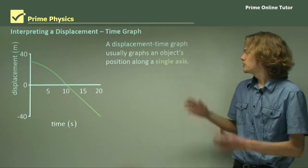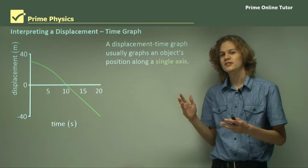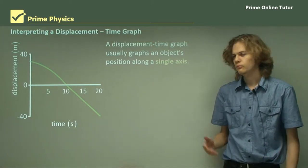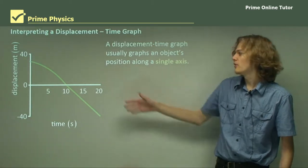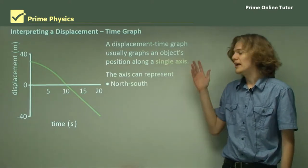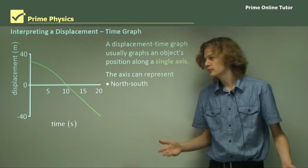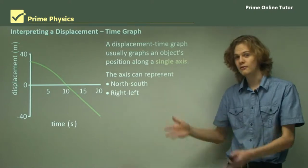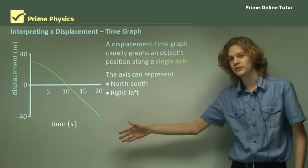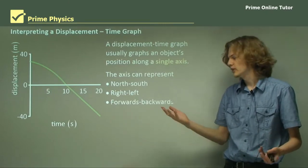A displacement time graph usually graphs an object's position along a single axis. Because one axis is time, the other axis has to be position. The axis can represent either north to south in some graphs, or right to left — so above the graph will be to the right, and below the graph will be to the left. Forwards or backwards works the same way.